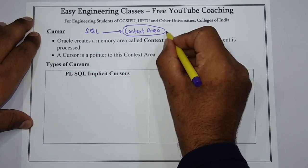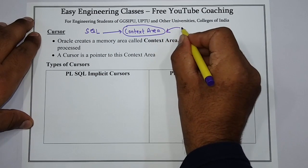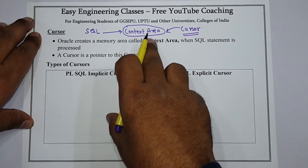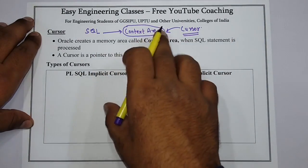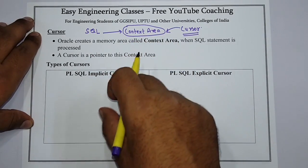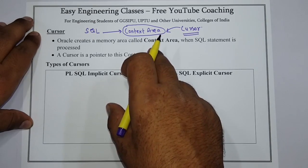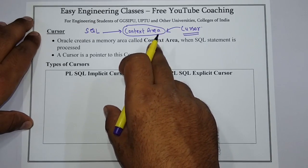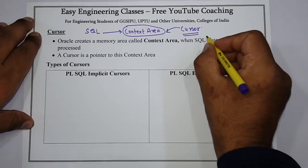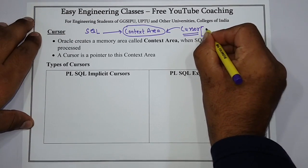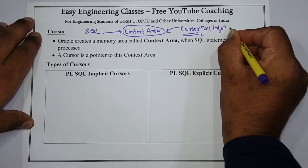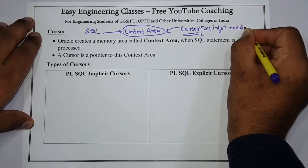A cursor is a pointer to this context area. It contains all the information needed to process the SQL statement. So, a cursor basically contains all the information which is needed to process the SQL statement.